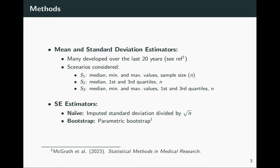Apart from estimating the mean and standard deviation, another consideration is how to obtain an estimate of the standard error of these imputed means. The most common approach in the literature is what we refer to as the naive approach, which uses the imputed standard deviation divided by the square root of the sample size.